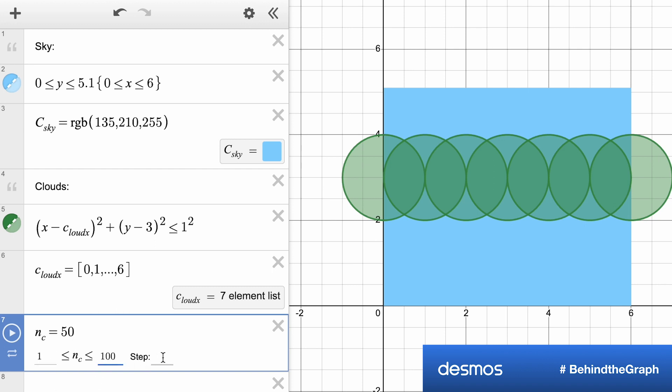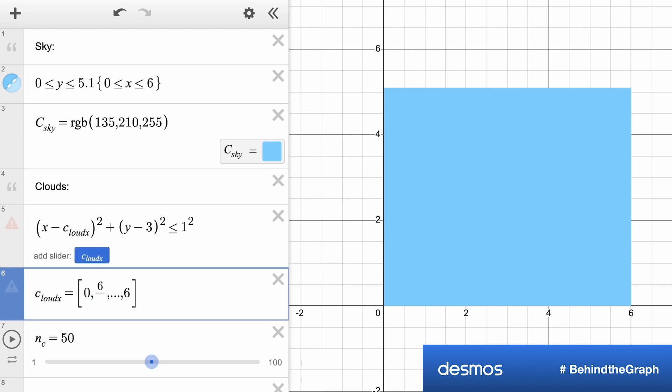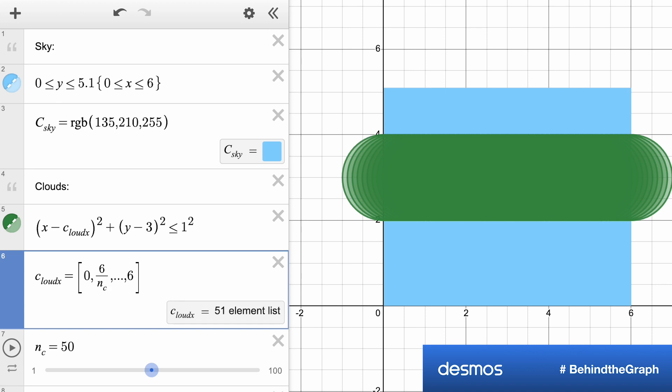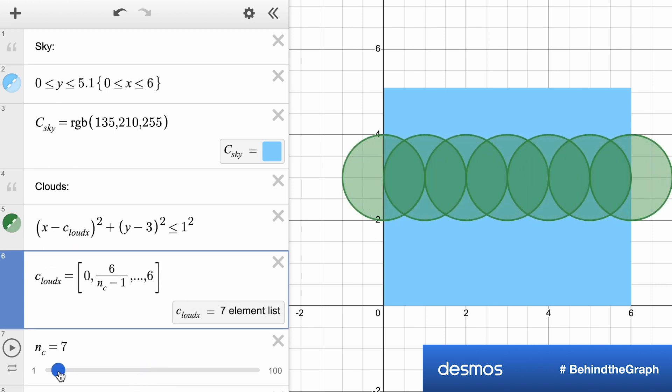but I want any number of clouds. So I'm going to set this variable n_c to be my number of clouds. And now I want to break up that list to show that many clouds all at once. So I can now just change that slider value to get all the clouds I want.